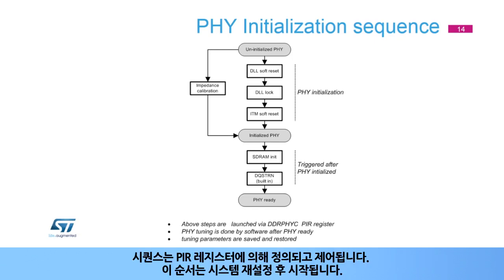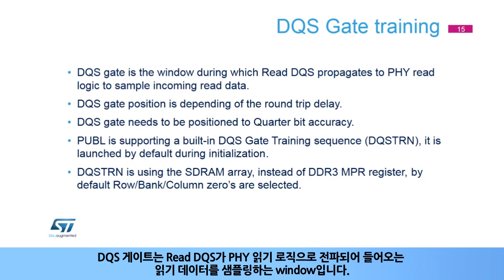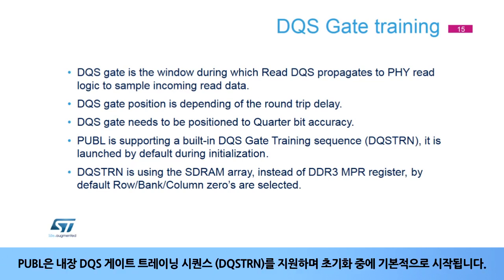The initialization sequence is defined and controlled by the PIR register and is launched after a system reset. Tuning parameters, determined by software during bring-up, are saved and restored. The DQS gate is the window during which read DQS propagates through the PHY read logic to sample incoming read data. DQS gate position is dependent on the round-trip delay and needs to be positioned to quarter-bit accuracy. PUBL supports a built-in DQS gate training sequence, or DQSTRN, launched by default during initialization.